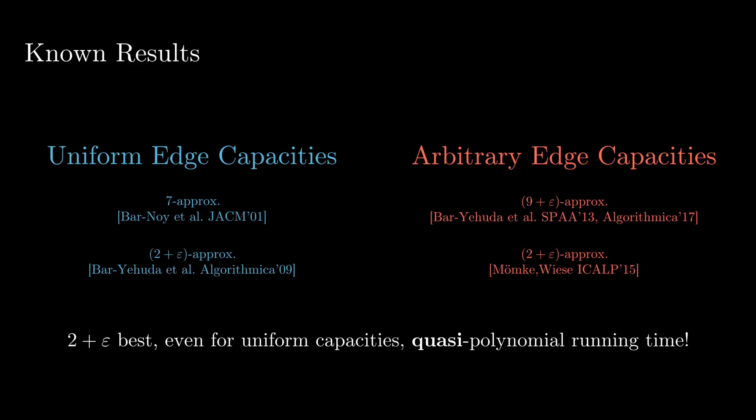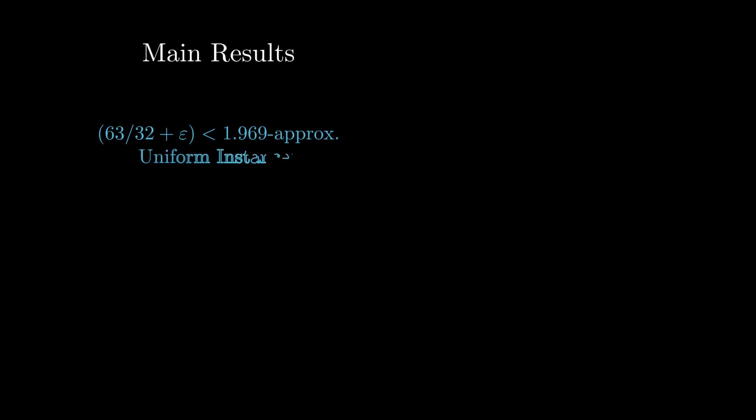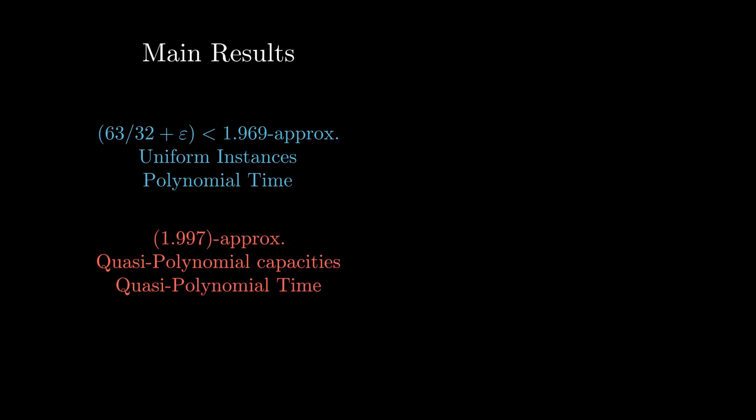In contrast, for UFP there is a 1 plus epsilon approximation in quasi-polynomial time. We were now able to overcome some of the difficulties that held us back from obtaining a better-than-2 approximation previously. Our first main result is a 63/32 plus epsilon approximation, which is smaller than 1.969, works for uniform instances, and runs in polynomial time. Our second main result is a 1.997 approximation algorithm for much more general instances with quasi-polynomially bounded capacities, running in quasi-polynomial time — where quasi-polynomial means asymptotically n to the poly-log n.